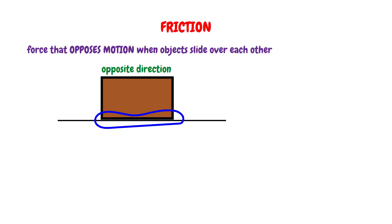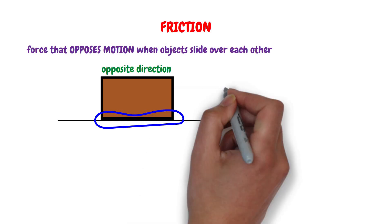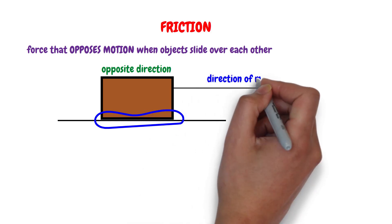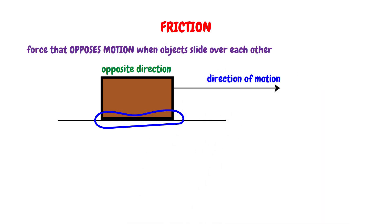For instance, if this is the direction of motion of the object, then the friction force will be in the opposite direction. And if the object changes its direction, the friction force also changes to the opposite direction. Friction occurs at the point of contact.